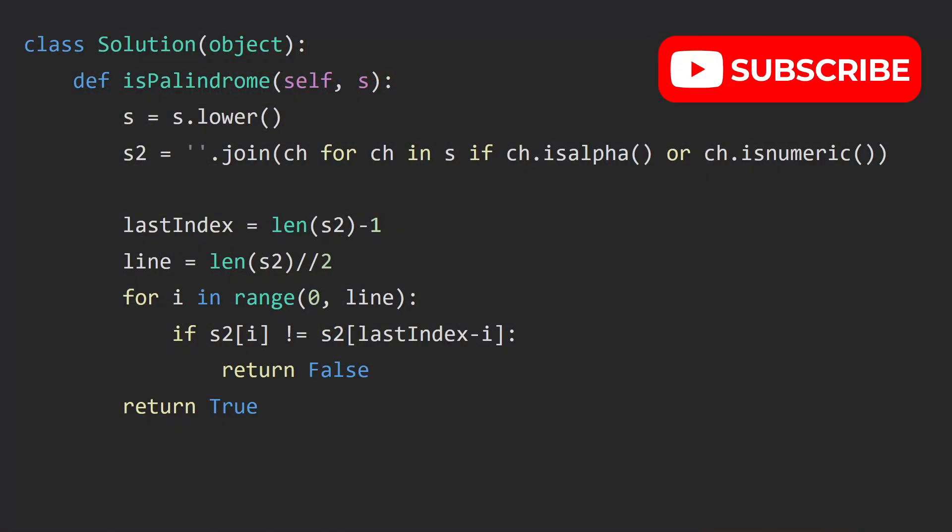Let's take a look at the second solution. We lowercase the letter s. Then same thing as last time, this line of code will get rid of all the non-alphabet characters. We have s2, then we determine what is the last index on the string. The last index is the length of s2 minus 1. Then the line is length of s2 floor divide by 2.